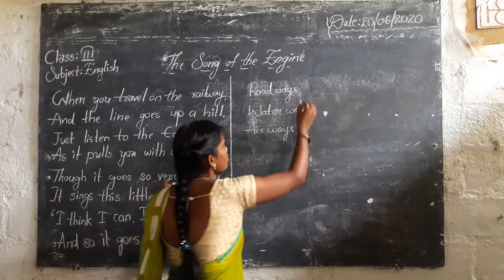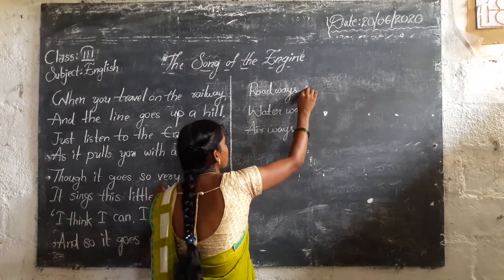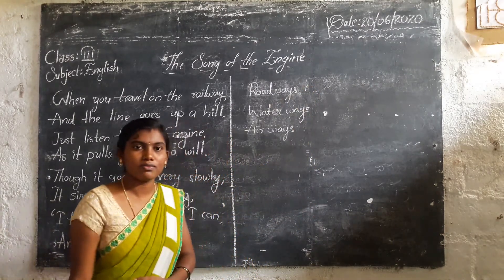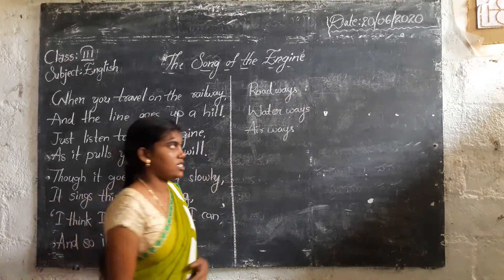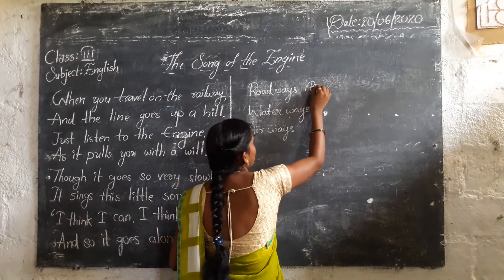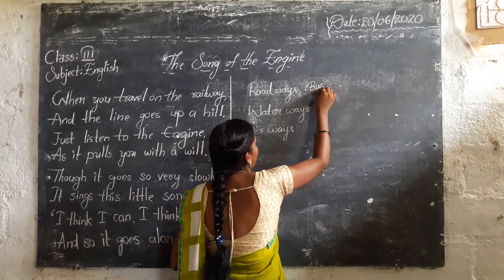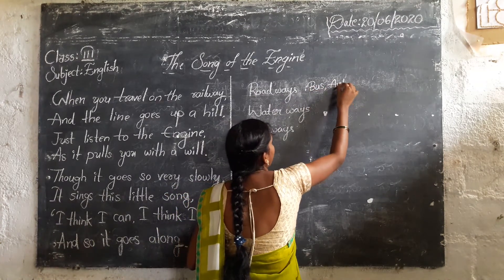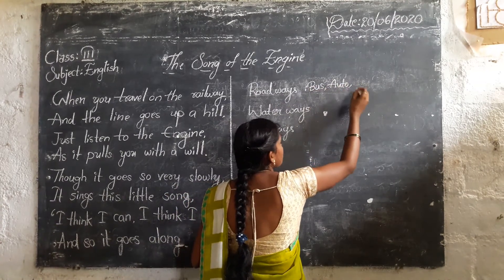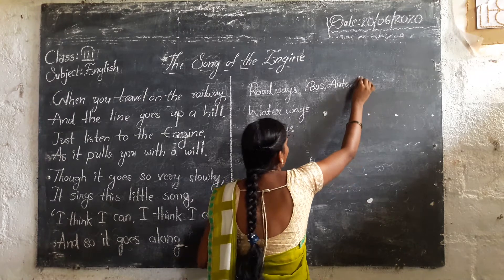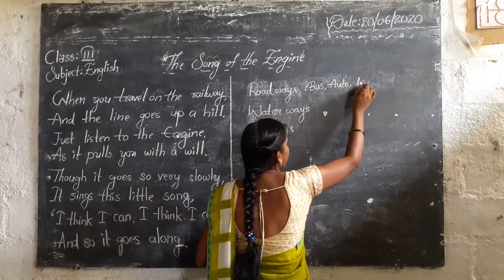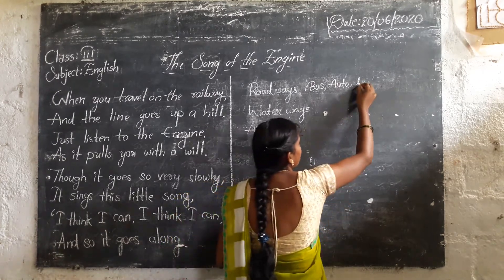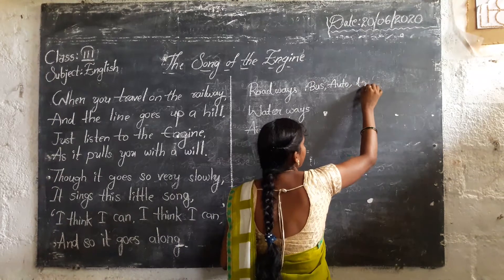So what are the examples of roadways? Can you tell? They are: bus, auto, lorry — we have many examples.